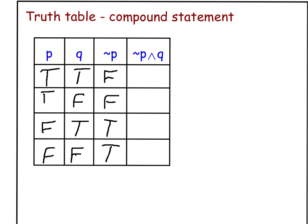Now to find the truth value of the compound statement, I'm going to use only not P and Q. So looking at those two columns, I notice my connector is an and.